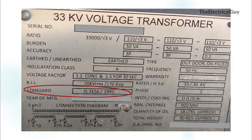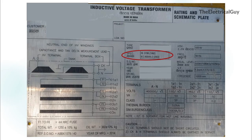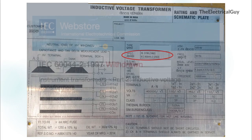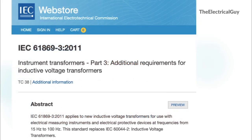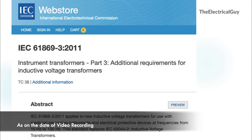IS stands for Indian Standard, and this standard specifies the general requirements applicable for voltage transformers. On the nameplate of the 420kV IVT, the reference standard is mentioned as IEC 60044-2. IEC stands for International Electrotechnical Commission. If you search this IEC on the official website, you will find that it has been withdrawn and is now replaced by IEC 61869-3, which covers additional requirements for inductive voltage transformers. So the latest IEC standard for IVTs is IEC 61869-3.